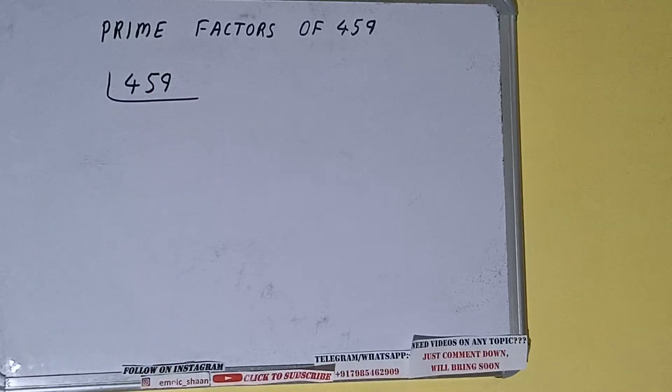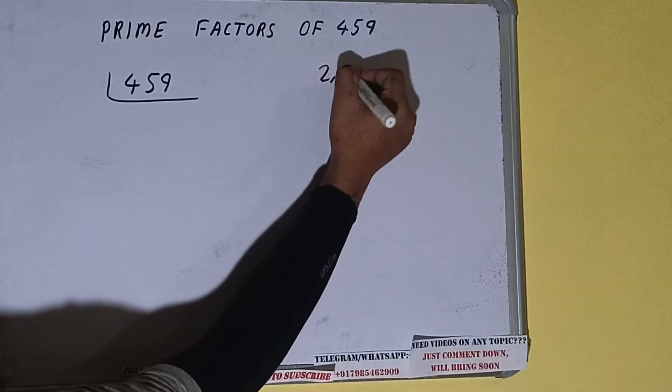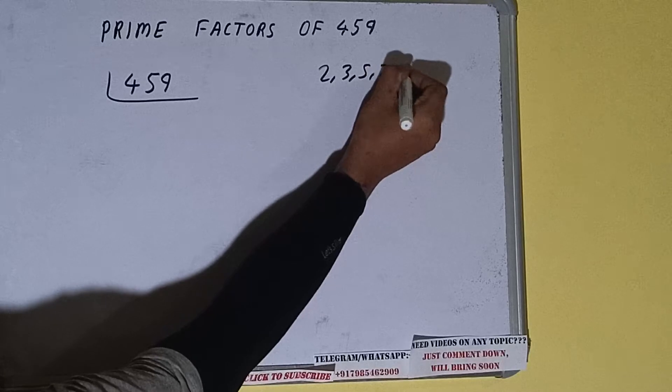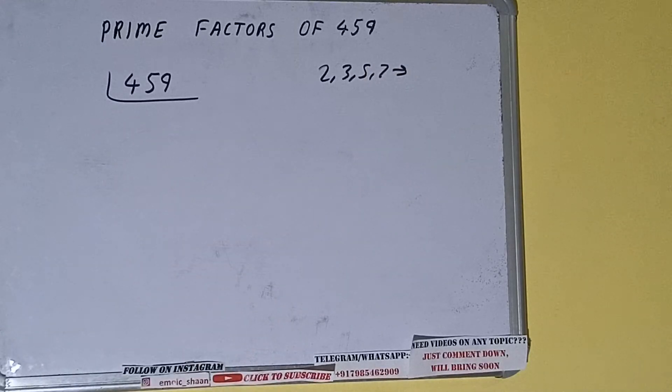The next thing we need to know about is what are prime numbers. So prime numbers are numbers that are divisible by one and the number itself, like 2, 3, 5, 7, and so on. All right, so we'll be checking with the lowest prime number we have.